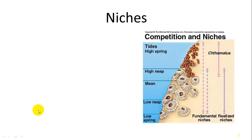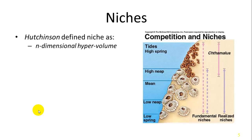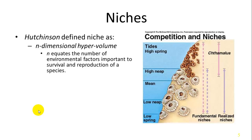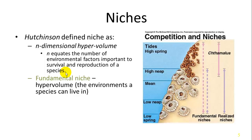Hutchinson defined the niche as an N-dimensional hypervolume, which is somewhat abstract. N represents the number of environmental factors important to a species' survival and reproduction. The hypervolume refers to the idea that based purely on physical limitations, a species could probably inhabit more than it actually does — this potential space is called the fundamental niche.